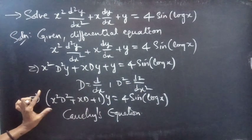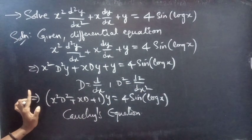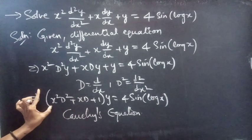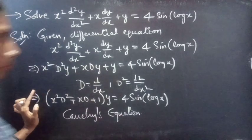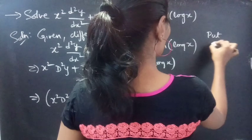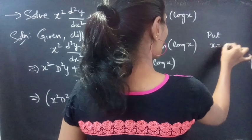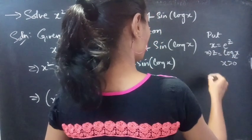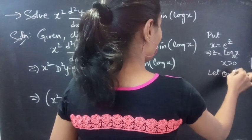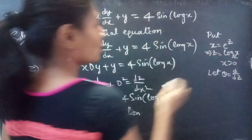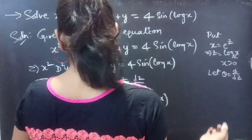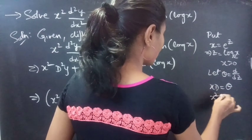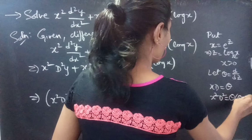Now we will reduce this equation to a higher order linear differential equation with constant coefficients, simply by making a substitution: put x equals to e power z, then z equals to log x to the base e for x greater than 0. Let theta equal d by dz, where theta is a differential operator whose independent variable is z. We will replace x d by theta and x squared d squared by theta into (theta minus 1).